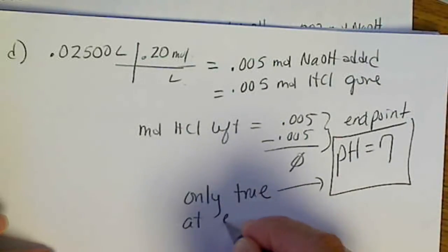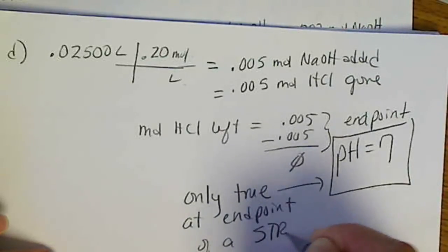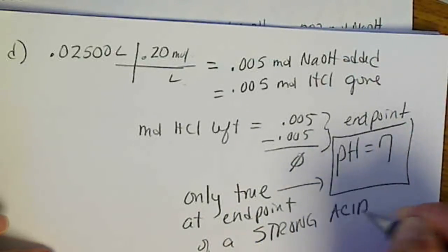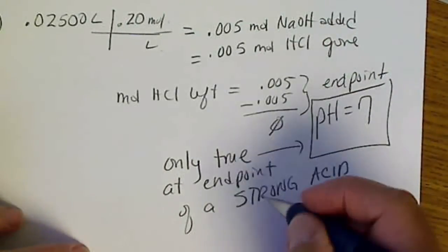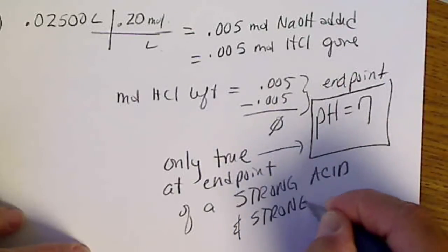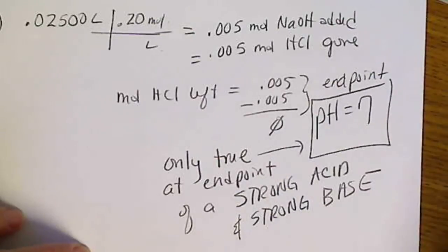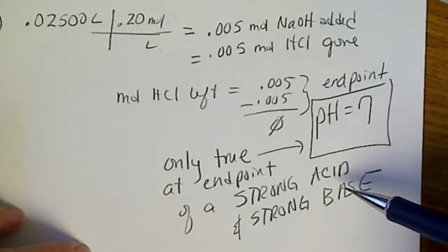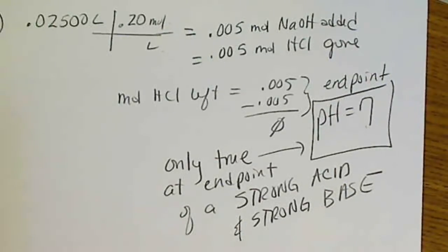This pH = 7 at the end point is only true for a strong acid with a strong base. We'll see in subsequent slides that a weak acid with a strong base, or vice versa, is going to be more complicated because the equilibrium equation dictates that. So at the end point of a weak acid or base during a titration, we don't want to say we're at a pH of 7 — we'll see why later.